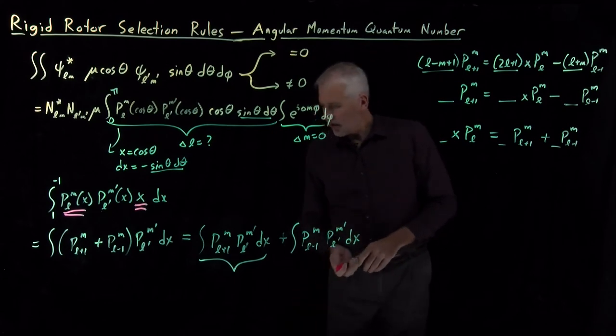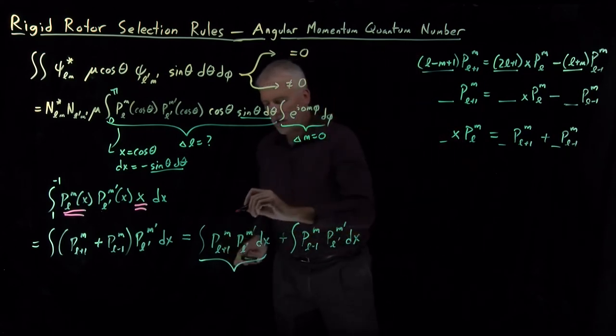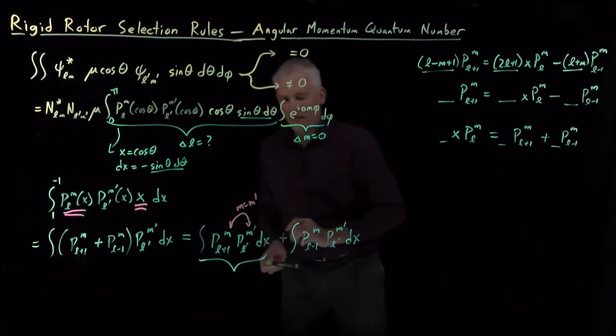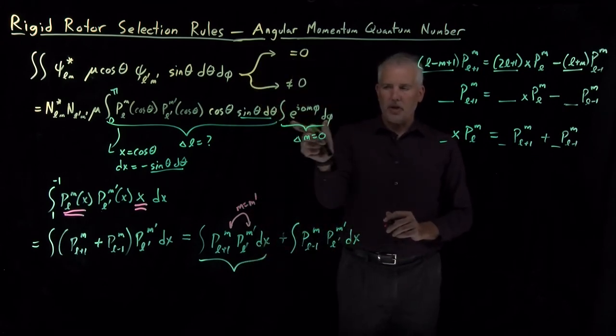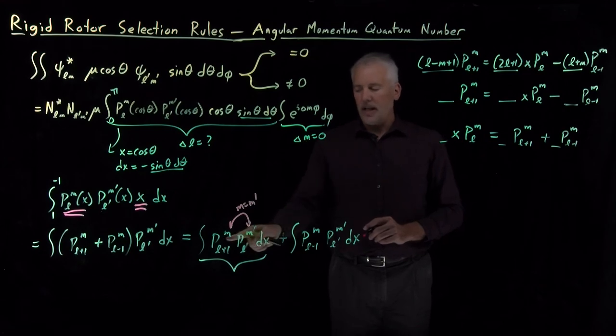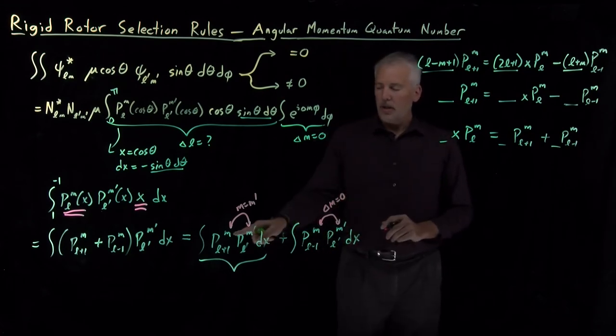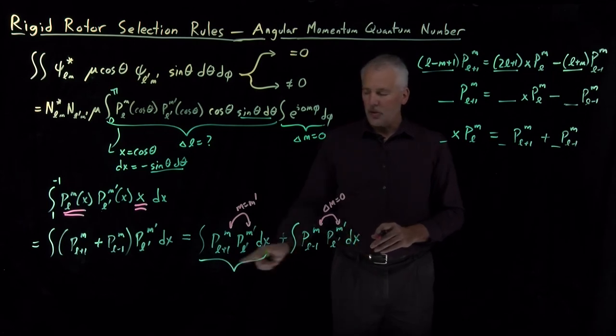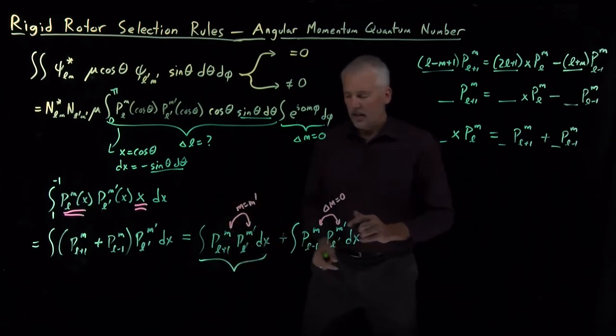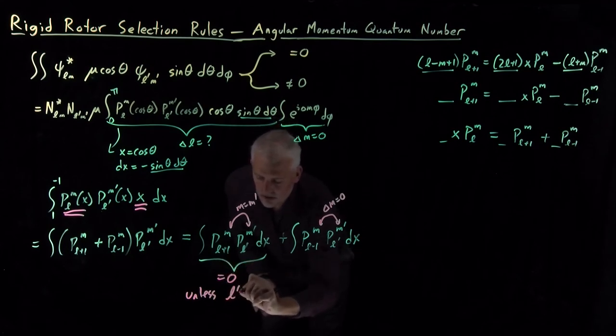This integral looks like I've got two different Legendre polynomials, an L plus 1 and an L prime. First of all, let me point out that from the magnetic quantum number, we know that these two numbers are in fact the same. The magnetic quantum number, this contribution to the integral will go to zero unless there's no change in the magnetic quantum number. So for any transition that's allowed, the m's are already going to be equal to each other. Delta m has to be zero. So the superscripts are going to be the same for any integral that matters. The question is, what about the subscripts? L plus 1 and L prime?